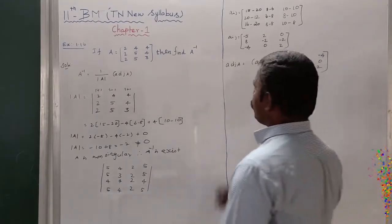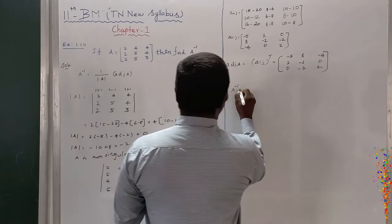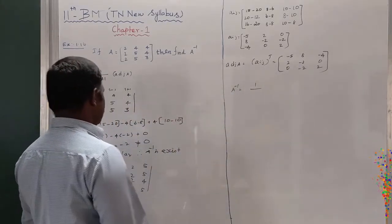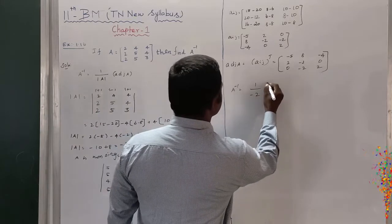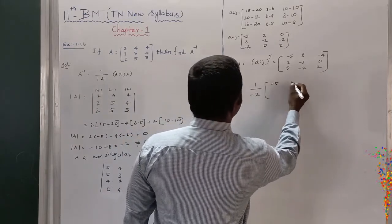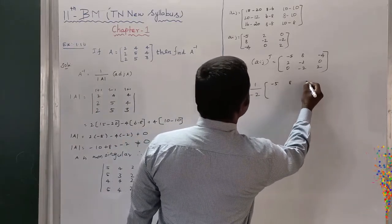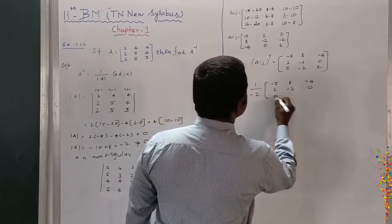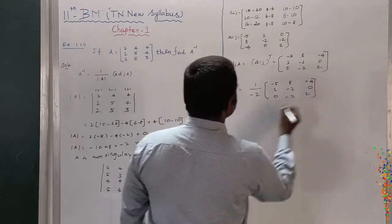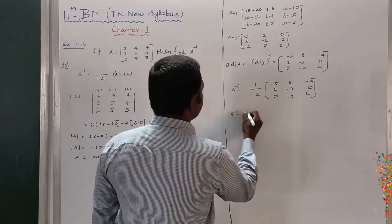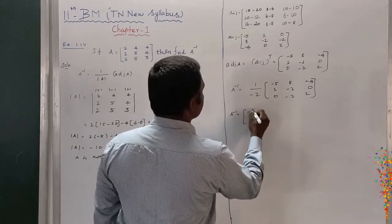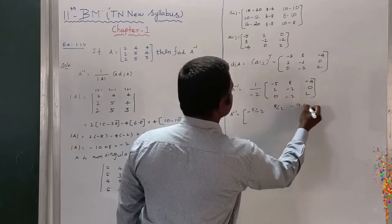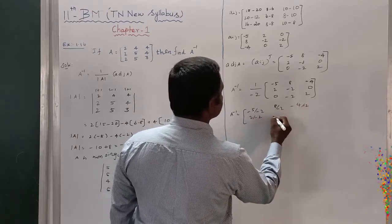Now I want to find out A inverse. A inverse equals 1 by modulus of A, and modulus of A is minus 2, into adjoint of A, which is [minus 5, 8, minus 4; 2, minus 2, 0; 0, minus 2, 2]. So I can divide each element by minus 2: minus 5 by minus 2, 8 by minus 2, minus 4 by minus 2, and so on.